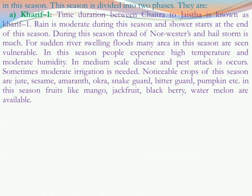Notable crops of Kharif 1 are jute, sicham, amaranth, okra, snake gourd, bitter gourd, and pumpkin. Important fruits for Bengalis that are available in this season include mango, jackfruit, blackberry, and watermelon.